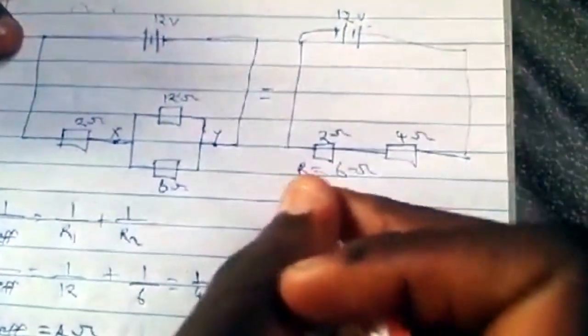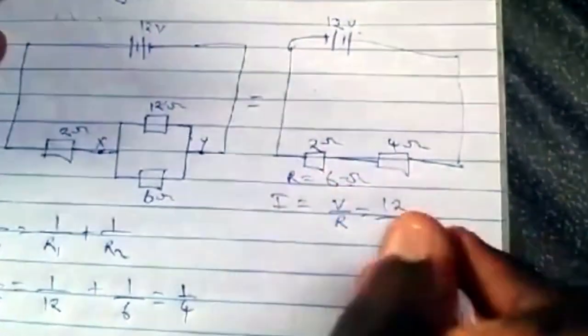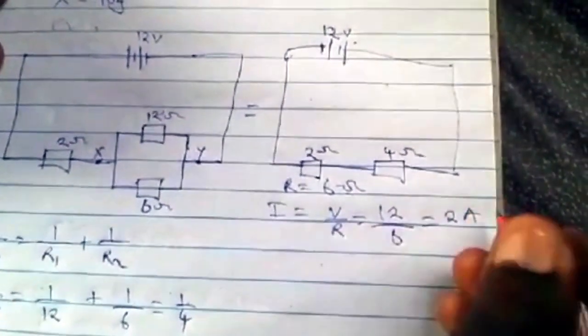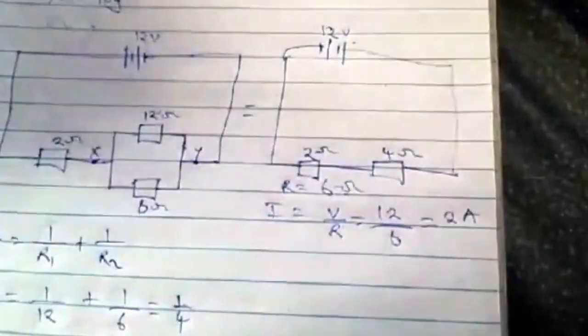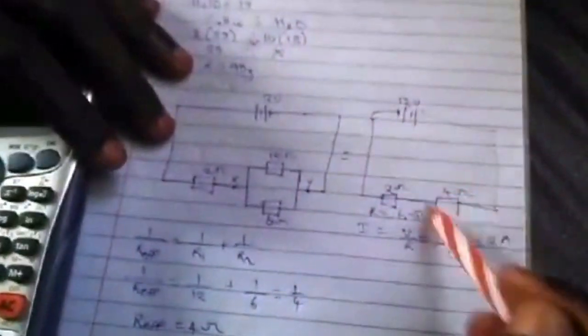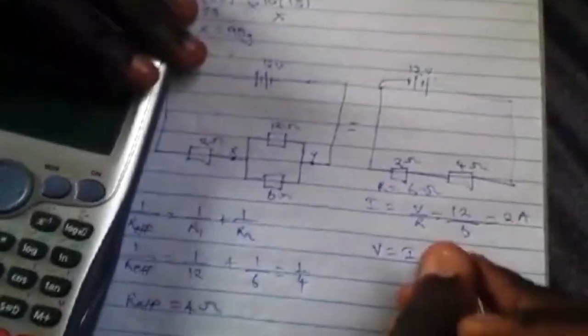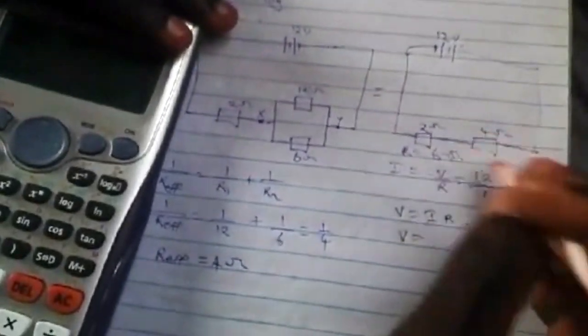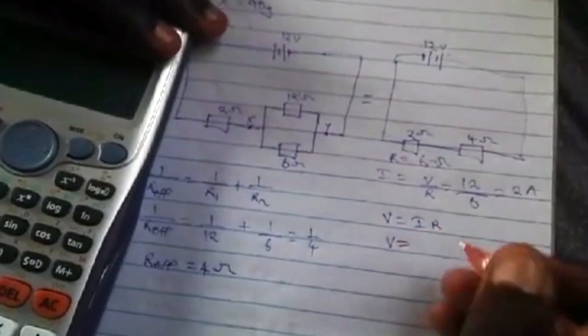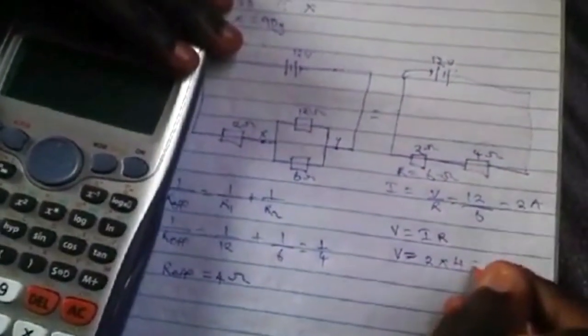The next question asks us to find the current flowing through the 6-ohm resistor. We use the same circuit to find the voltage drop in this 4-ohm resistor. The voltage drop is V equals IR. The voltage in this 4-ohm effective resistance equals 2 times 4, so 2 amps times 4 ohms equals 8 volts.